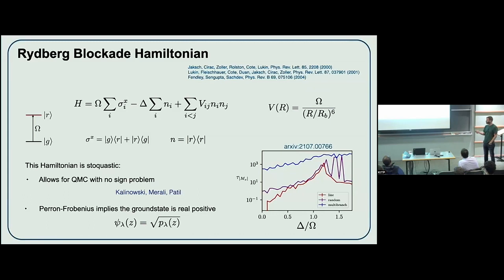The other consequence of stoquasticity: the Perron-Frobenius theorem implies the ground state eigenvalues are all real and positive in that basis, which means you're informationally complete just in the occupation basis and there's no phase in the ground state wave function. So I'm going to take advantage of that and use just data in the occupation basis to train some generative models.